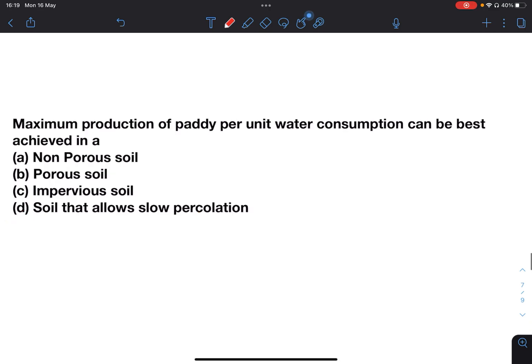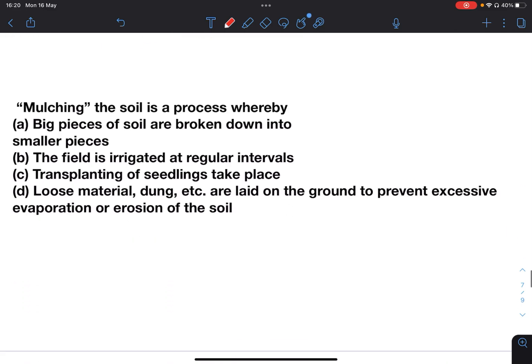Next: Maximum production of paddy per unit water consumption can be best achieved in non-porous soil, porous soil, impervious soil, or soil that allows slow percolation. Paddy needs more water, so the soil which will allow slow percolation will be best for it. Answer will be D, soil that allows slow percolation.